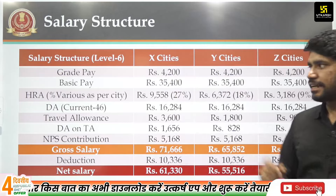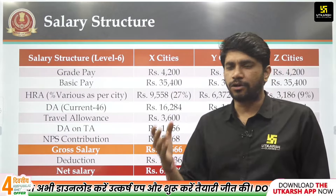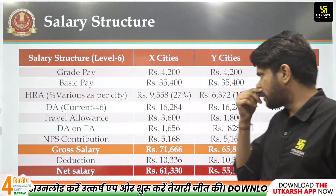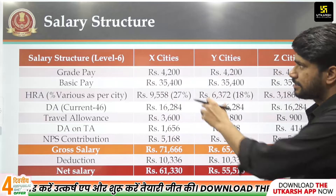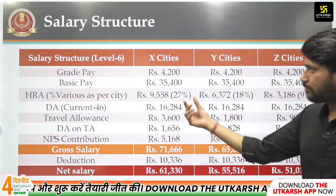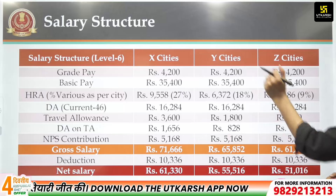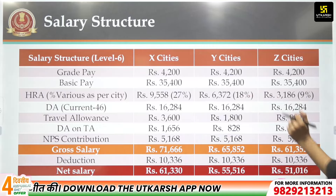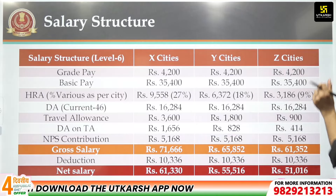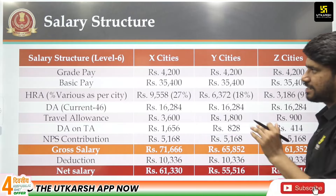The difference between cities is the HRA — House Rent Allowance. For X cities it is 27%, for Y cities it is 18%, and for Z cities it is 9%. This is the HRA you receive.